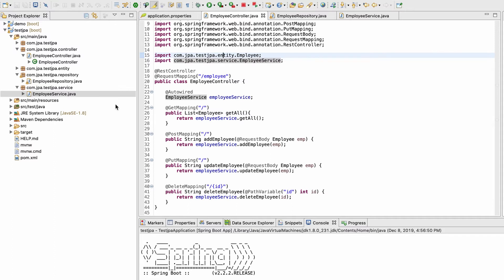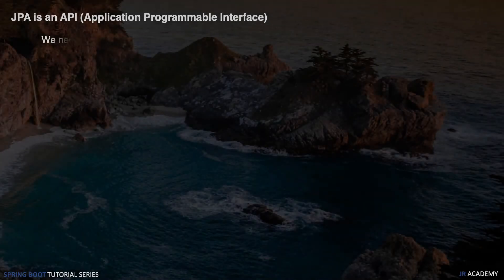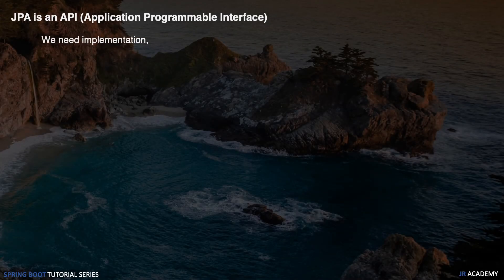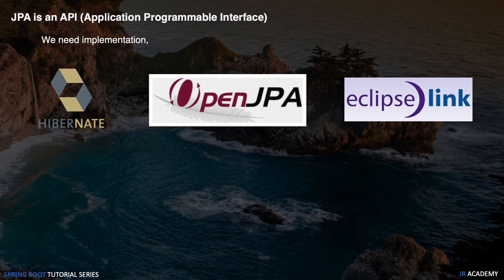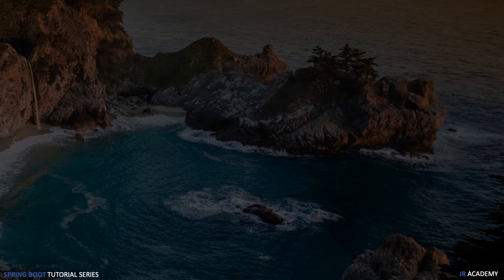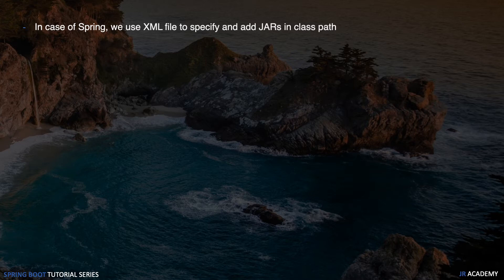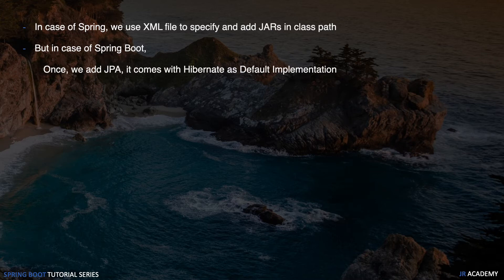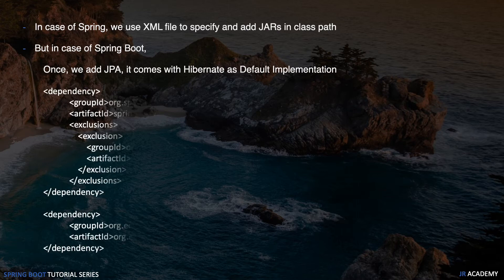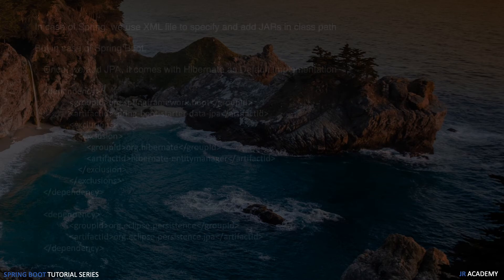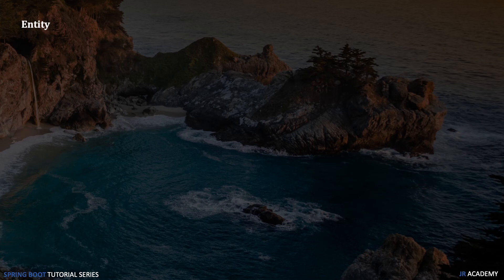Before jumping into JPA CRUD operations, we need to understand a few things. First, JPA is an API and we need to provide an implementation of it. There are a couple of implementations such as Hibernate, OpenJPA, and EclipseLink. In traditional Spring, we used to specify Hibernate in XML files and add jar files. But in Spring Boot, Spring Data JPA comes with Hibernate as the default implementation. We can exclude Hibernate and add another implementation if we want, but for now we'll leave it as Hibernate.